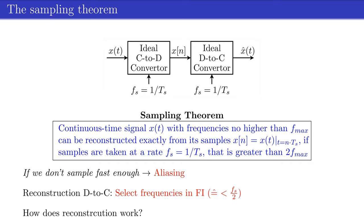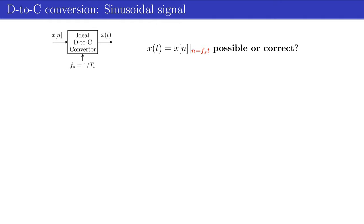The question is, how can we reconstruct the continuous time signal x of t from the discrete time samples x of n? Is it possible, or correct, to simply replace the integral index n by fs times t?